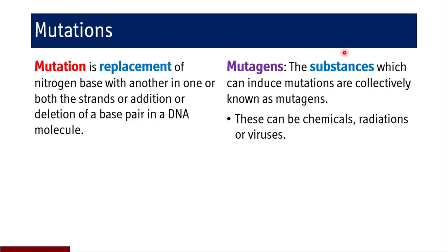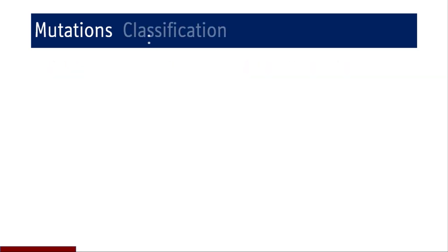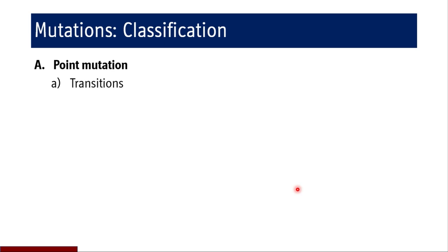Mutagens are substances which can induce mutations, and these may be chemicals, radiations, or viruses. The classification of mutations includes point mutations, frameshift mutations, deletions, and insertions.